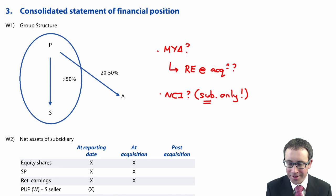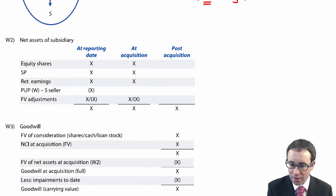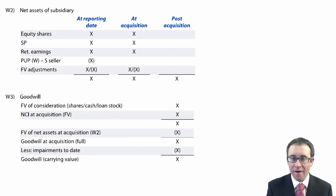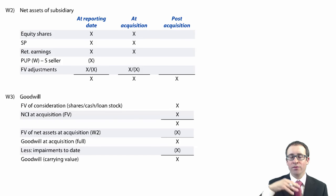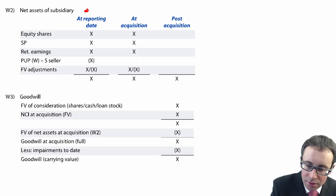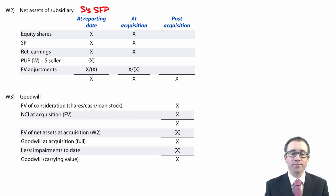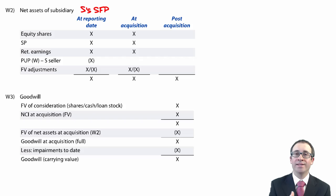The net assets working is vitally, vitally, vitally important — it's fundamental. You look at the net assets of the subsidiary at the reporting date, taken from S's SFP. You've got your equity shares, share premium, and retained earnings. When we're looking at net assets, we look at the equity section.